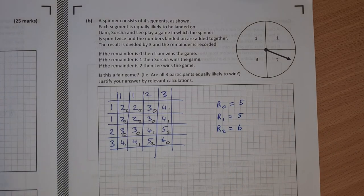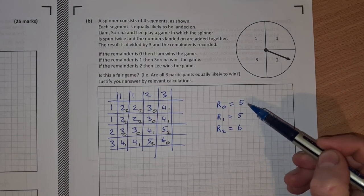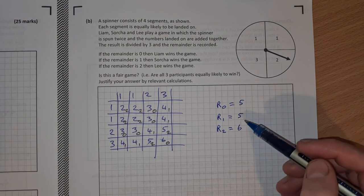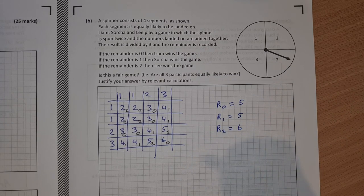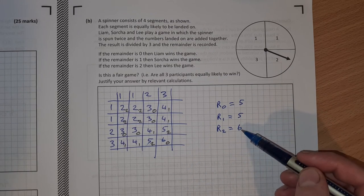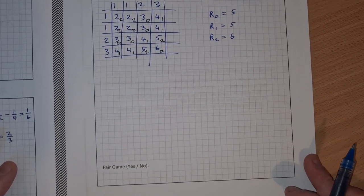So that means out of 16 perfect goes of this game, there'll be a remainder 0 5 times, a remainder 1 5 times and a remainder 2 6 times. So this game is not fair. Remainder 2 is more likely than remainder 0 or remainder 1.